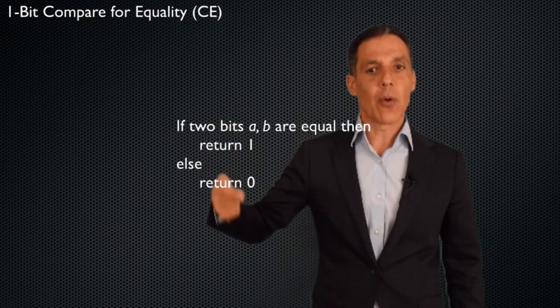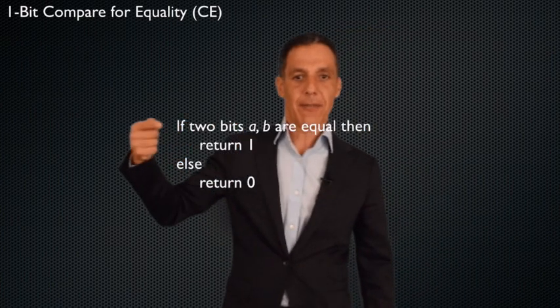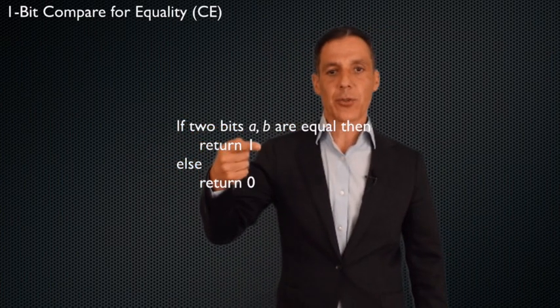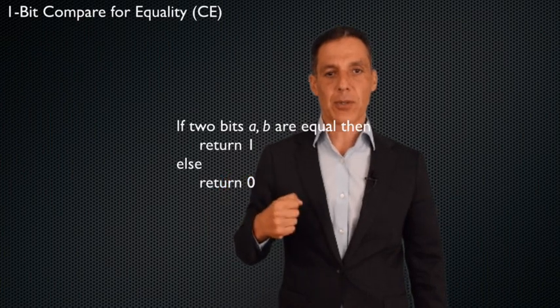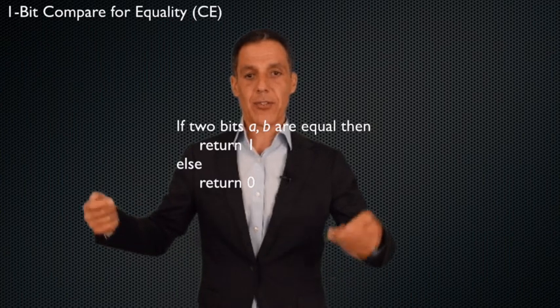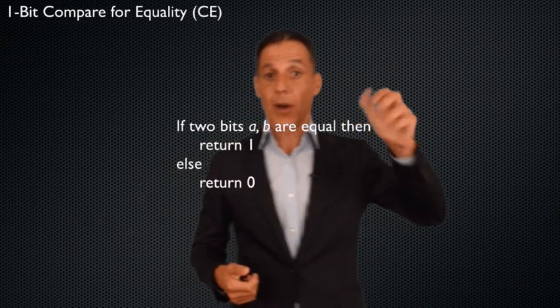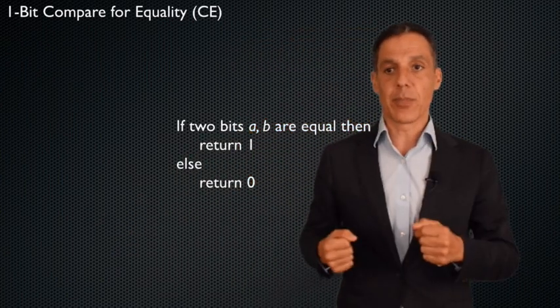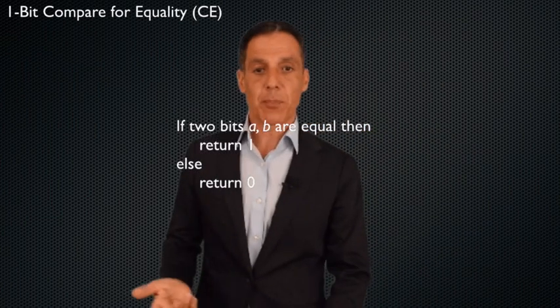And so here's my little pseudocode for the computation. If a and b are equal, then return 1, otherwise return 0. Notice everything's binary. A and b can either be 0 or 1, because everything's in binary representation. And my output is either a 1 or a 0, depending on if those two bits are equal or not. So pretty straightforward.